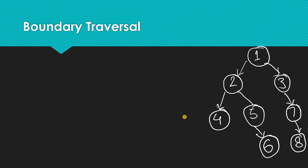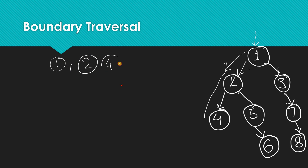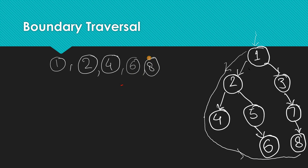Boundary traversal is pretty simple — you traverse along the boundary of the binary tree and print its boundary nodes. Starting from the root, we first traverse the left boundary and print those elements. Then we go along the bottom boundary, printing leaves like six and eight. Then we travel the right boundary back up, encountering seven, three, and back to one.